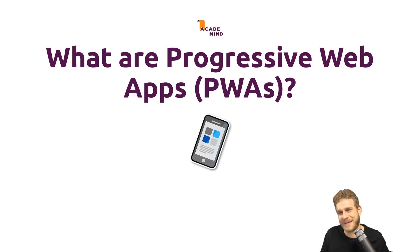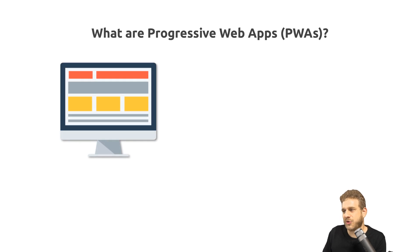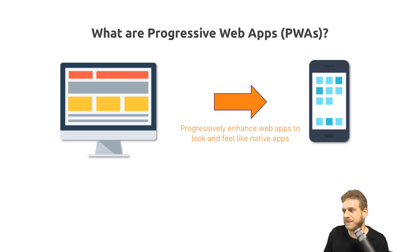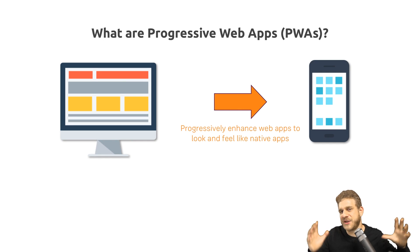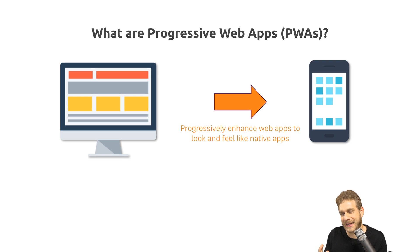What are progressive web apps? Progressive web apps is a term describing a set of technologies that allow us to do one cool thing: take your desktop web application. The idea behind progressive web apps and the different features it comprises is that we can progressively enhance our web application to look and feel like a native mobile app while still staying a web app.